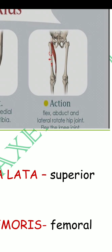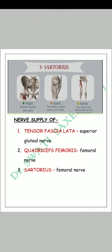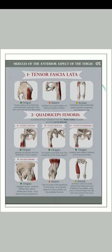To summarize: the Sartorius flexes, abducts, and laterally rotates the hip joint, and also flexes the knee joint. With this, our study of the muscles of the anterior compartment of the thigh comes to an end.